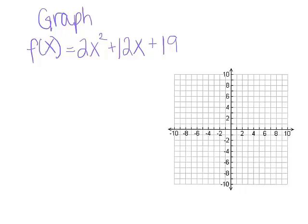Well, I know the y-intercept is 19 — the point 0 comma 19 — but that's not too helpful here because our axes only go up to 10, so we need some other way to graph this. If I was interested in finding the vertex, I could easily put this in vertex form by completing the square. I see that there's a 2 in front, so I'd have to factor that out. And that next term is even, so it wouldn't be that big of a deal. Let's do it.